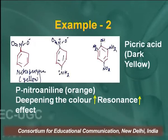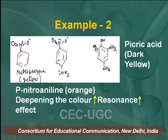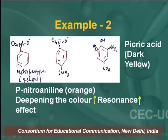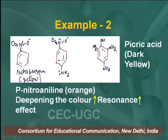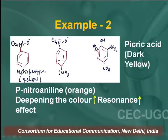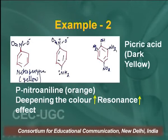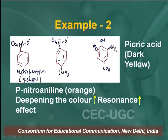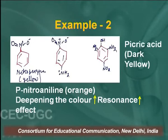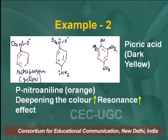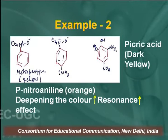Another important example: nitrobenzene is yellow in colour; amino nitrobenzene — para nitroaniline — is orange in colour; and picric acid, which has 3 nitro groups and 1 OH group, is dark yellow. Always remember: deepening of colour is associated with the resonance effect. More resonance stabilization gives a deeper colour.